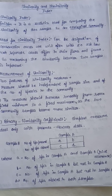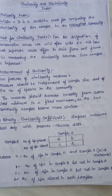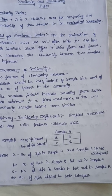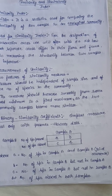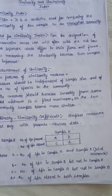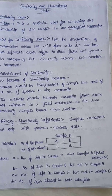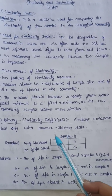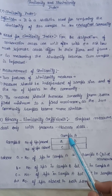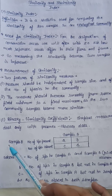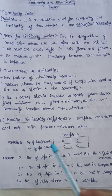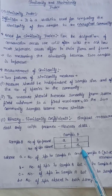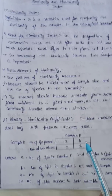Binary data is generally written in a quadrant format with four categories: a, b, c, and d. This quadrant has one axis for sample A and one for sample B. The four categories represent the different combinations of presence and absence across the two samples.